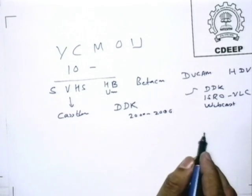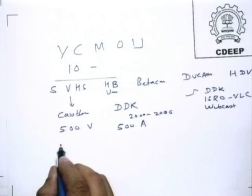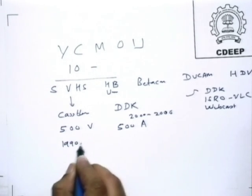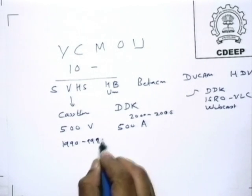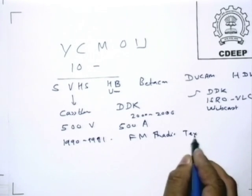Right now, in total, we have produced around 500 videos and around 500 audios. We also produce audio programs which go on radio. A new experiment was done by YCMOU in 1990 and 1991 — that was FM radio text. We prepared audio programs broadcast on FM radio, and along with that radio program, a text message could be delivered to the other end. That was a new technology.